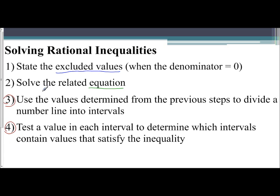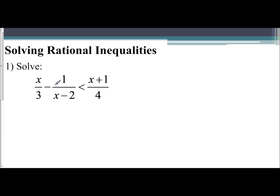Let's take a look at an example to understand what steps three and four are actually saying. If we look at the example: x over three minus one over x minus two is less than x plus one over four. The first thing we always do is find our excluded values. There's no variable in the denominator here or here — only with x minus two. So set x minus two equal to zero. The excluded value is x equals two.